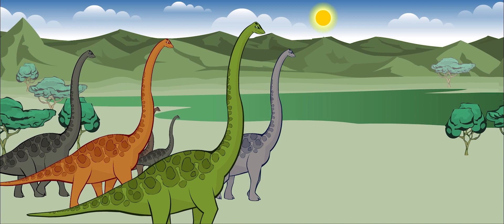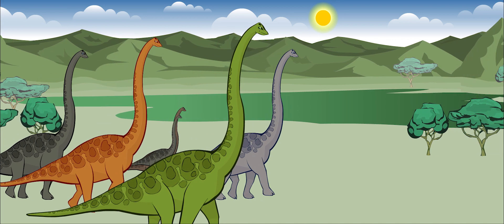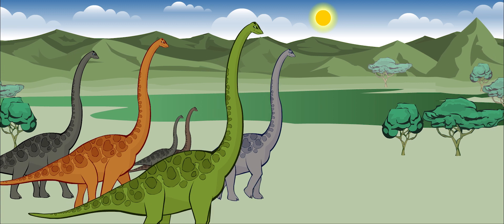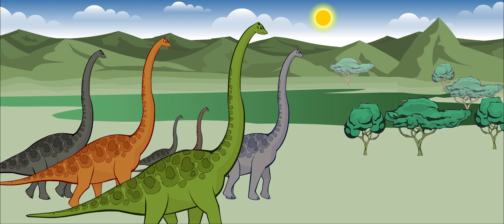When they were on the move, the larger, stronger adults walked along the edges of the group. The young stayed in the center to be protected against predators.